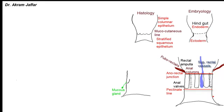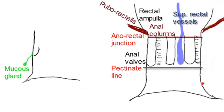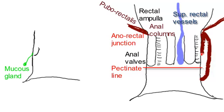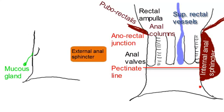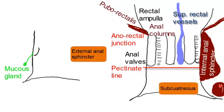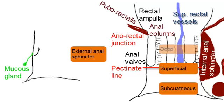The anal canal is related to sphincters — the internal anal sphincter and the external anal sphincter. The internal anal sphincter surrounds the upper two-thirds of the anal canal and is a thickening of the circular muscle coat of the rectum. The external anal sphincter is made of three parts of skeletal muscle fibers: the subcutaneous part, the superficial part, and the deep part. The external anal sphincter surrounds the lower two-thirds of the anal canal.